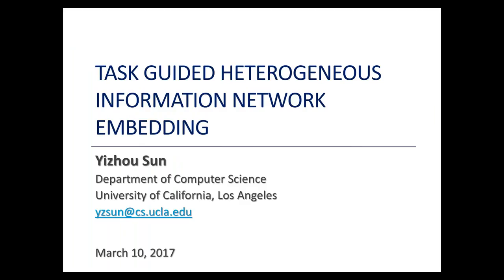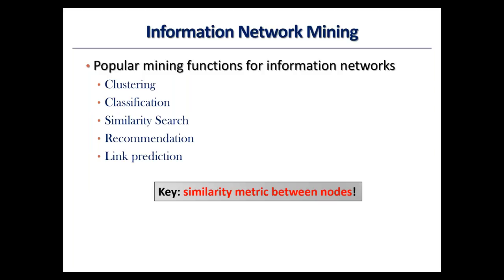So again, I'm going to introduce how we can do embedding in heterogeneous information networks, and more importantly, how this embedding can be generated according to different tasks. Information networks have very wide applications, including in the biomedical domain. Once we model our data into information networks, a lot of important mining functions can be performed, like clustering — namely finding communities — classification — namely assigning labels to each node — and similarity search, recommendation, and link prediction.